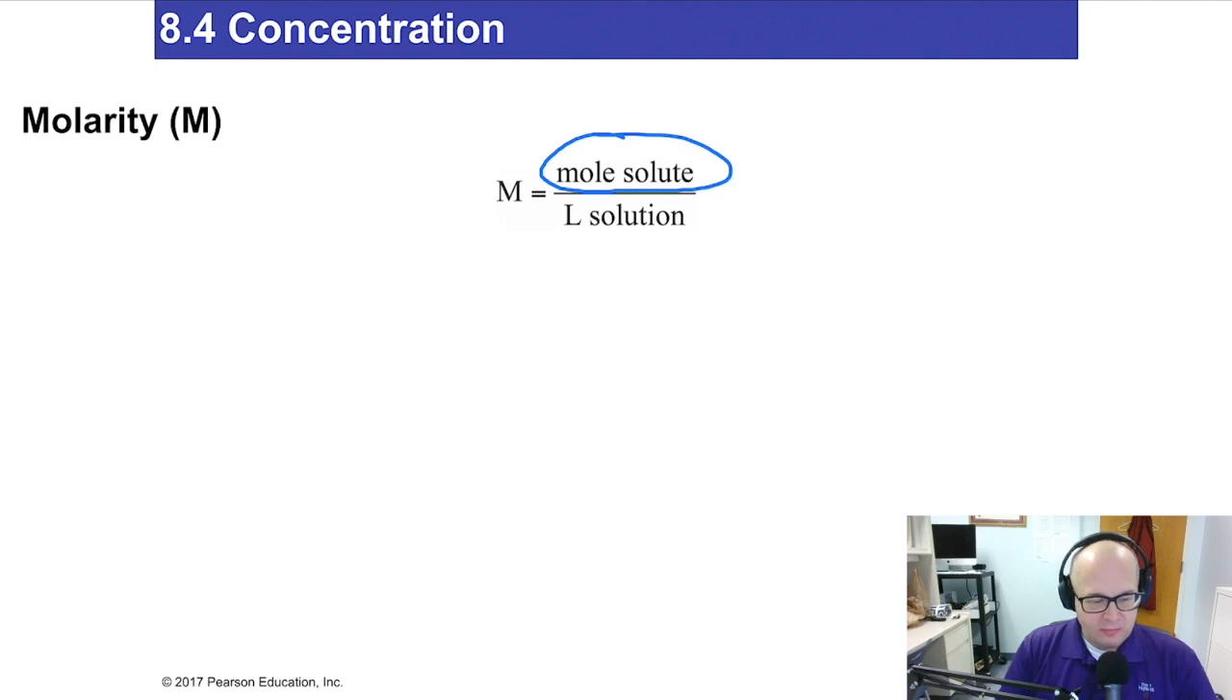First of all, capital M is the abbreviation for molarity, not lowercase m. Lowercase m is mass. Moles solute, so you have to calculate the moles of whatever you're dissolving. Sodium chloride, potassium phosphate, sugar, whatever it is, calculate the moles. You know how to do that? You take the grams of whatever you're using and divide it by the molar mass. That's how you get the moles.